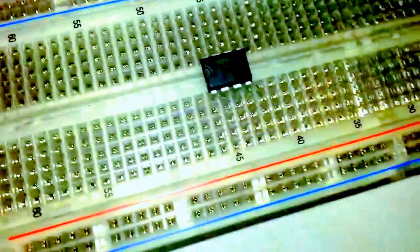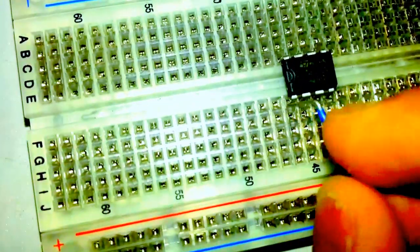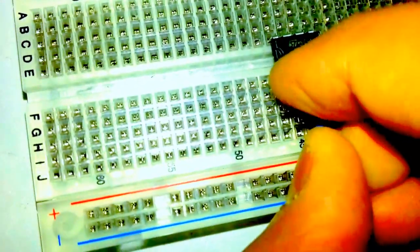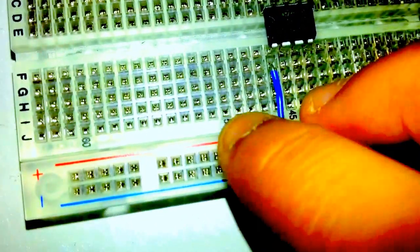So pin number one gets connected to the negative side of the battery like this. Okay, pin number eight gets connected to the positive side.